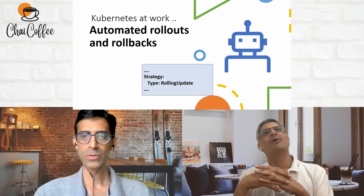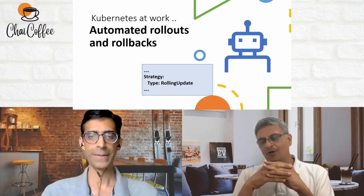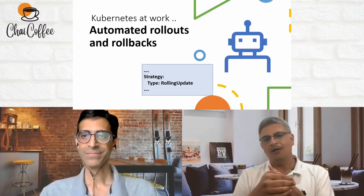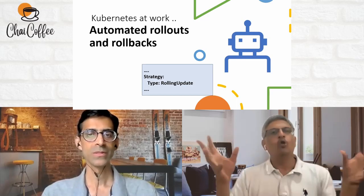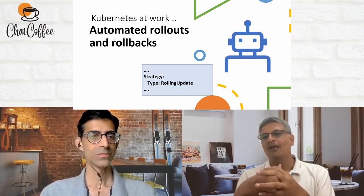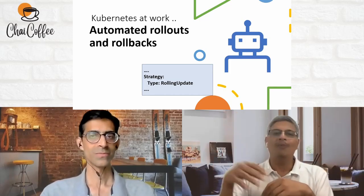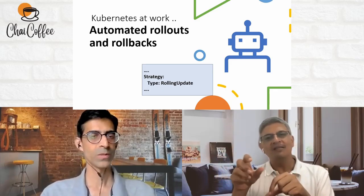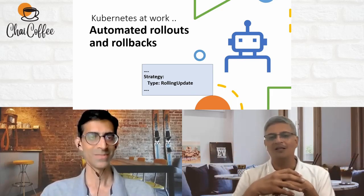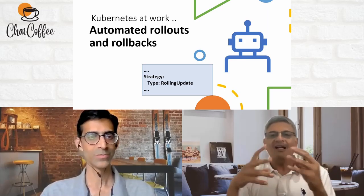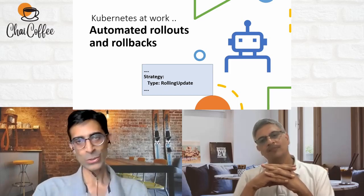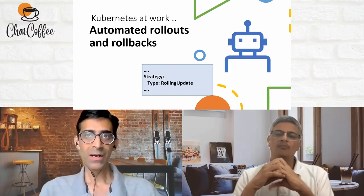For example, Airbnb adopted Kubernetes and migrated hundreds of services. Take the search bar service — showing properties in London based on query, past history, date range, etc. That's one of the most important and fastest-changing services. If you had to bring down the whole application just because of a new innovation in that service, that's definitely not acceptable. Innovations started happening much faster because of Kubernetes.